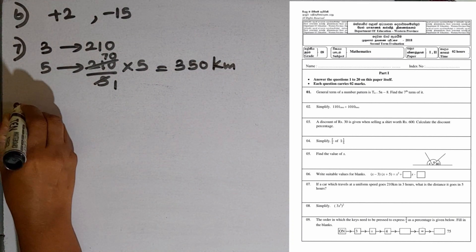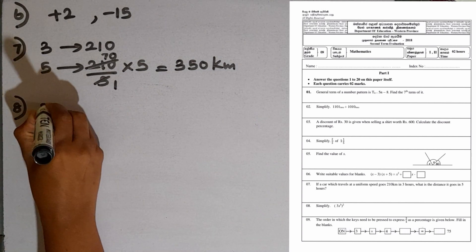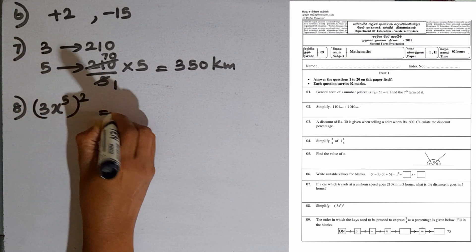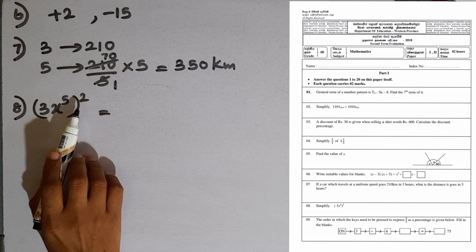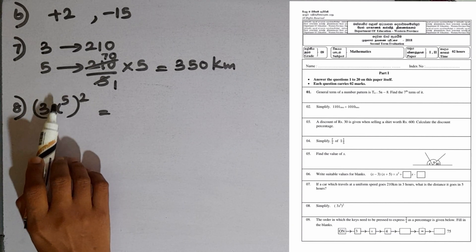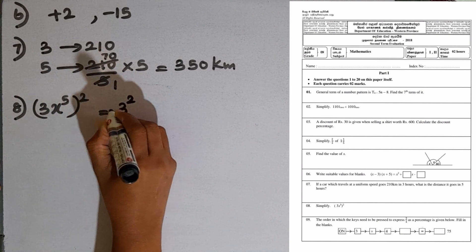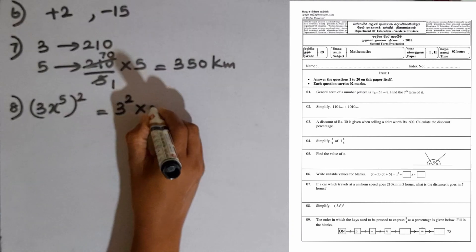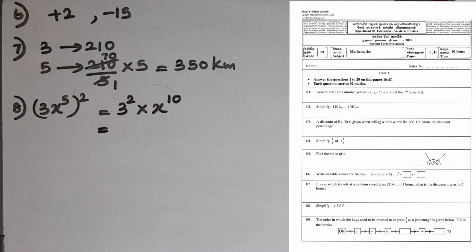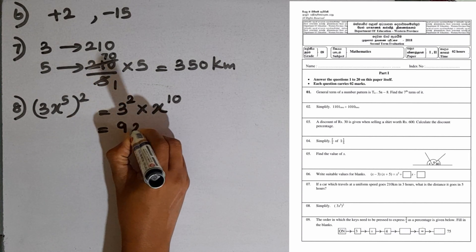Question number 8: simplify (3x to the power 5) to the power 2. The outer power of 2 applies to both 3 and x to the power 5. So we expand as 3 to the power 2 multiplied by x to the power 5 times 2, which is x to the power 10. Since 3 squared is 9, the answer is 9x to the power 10.